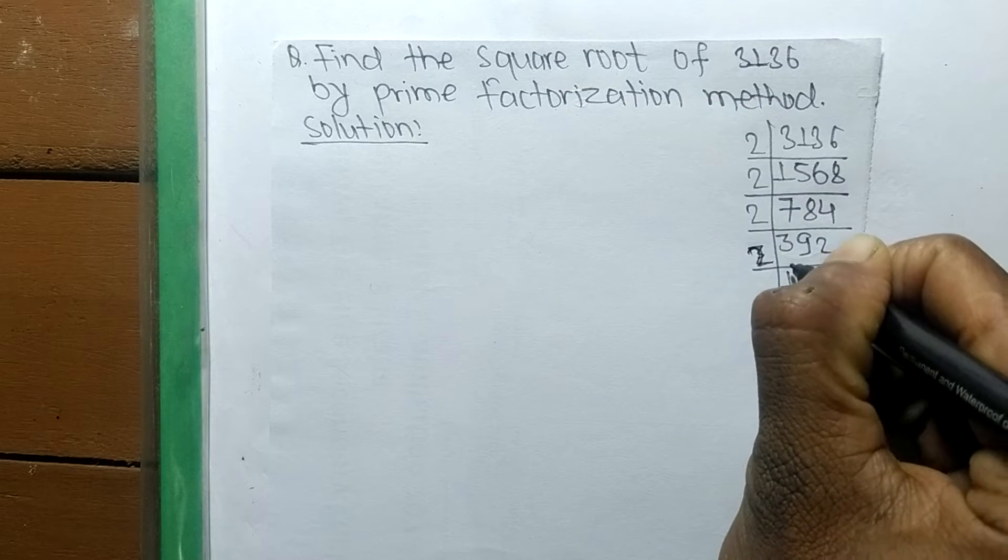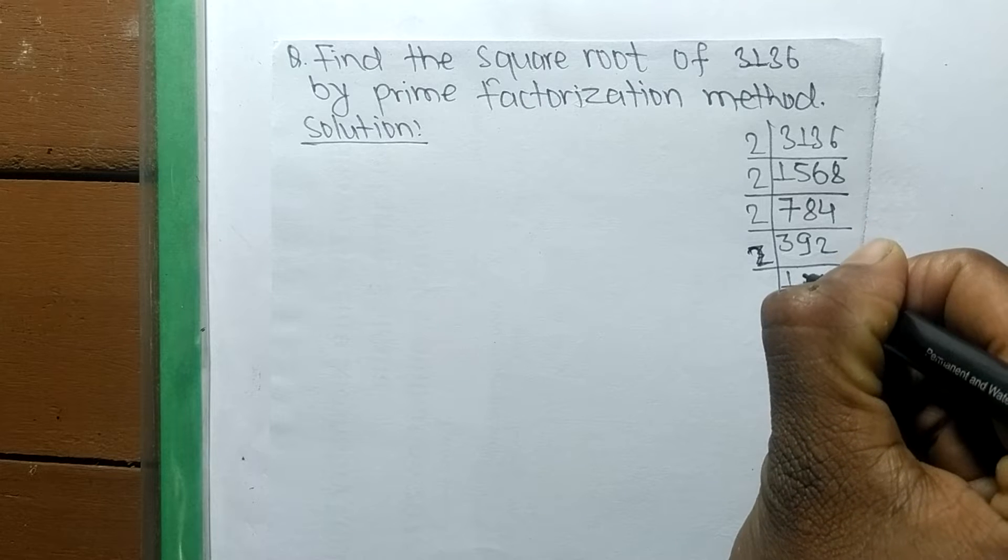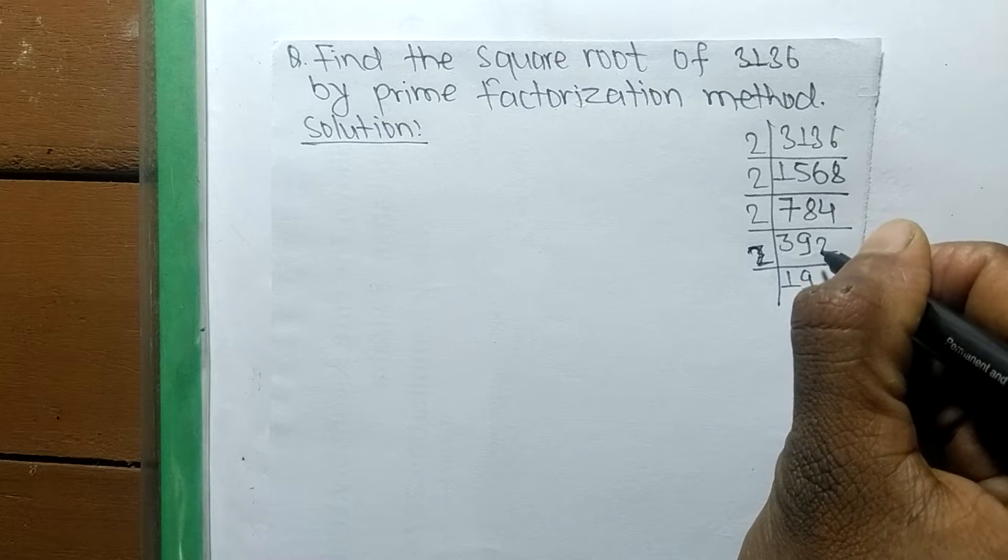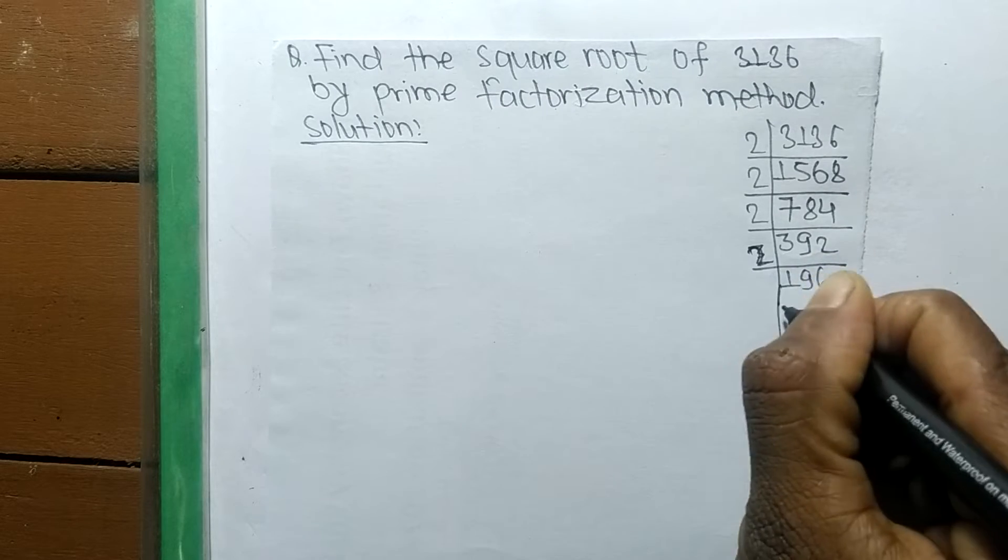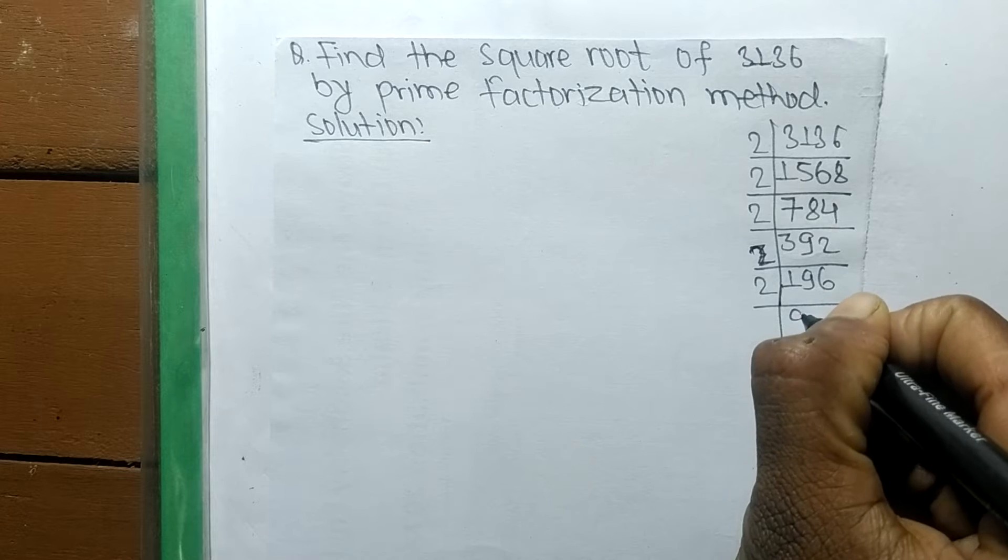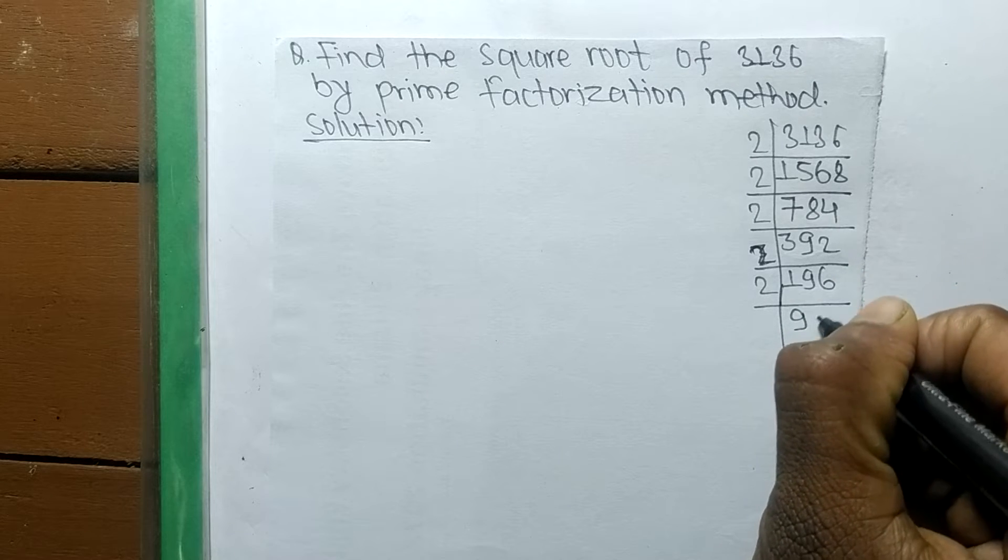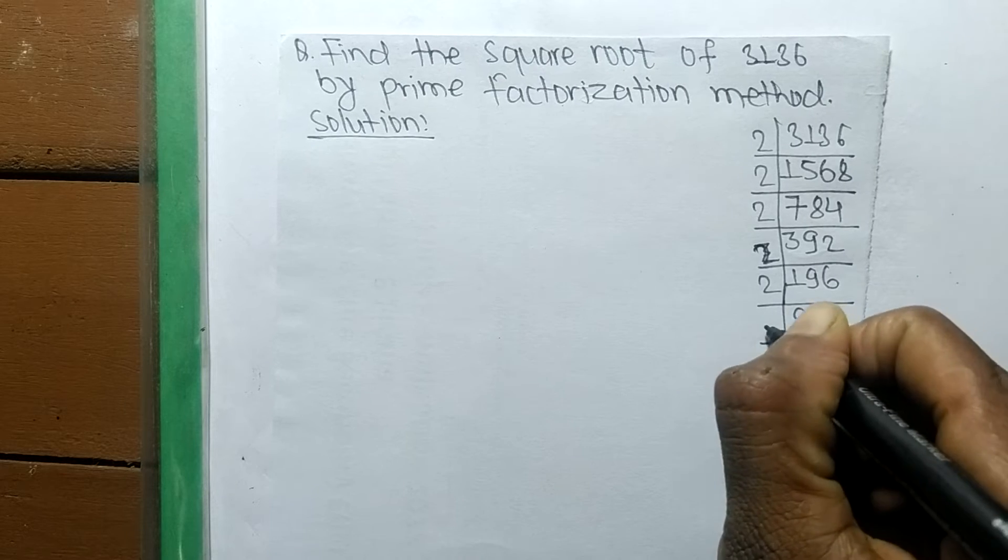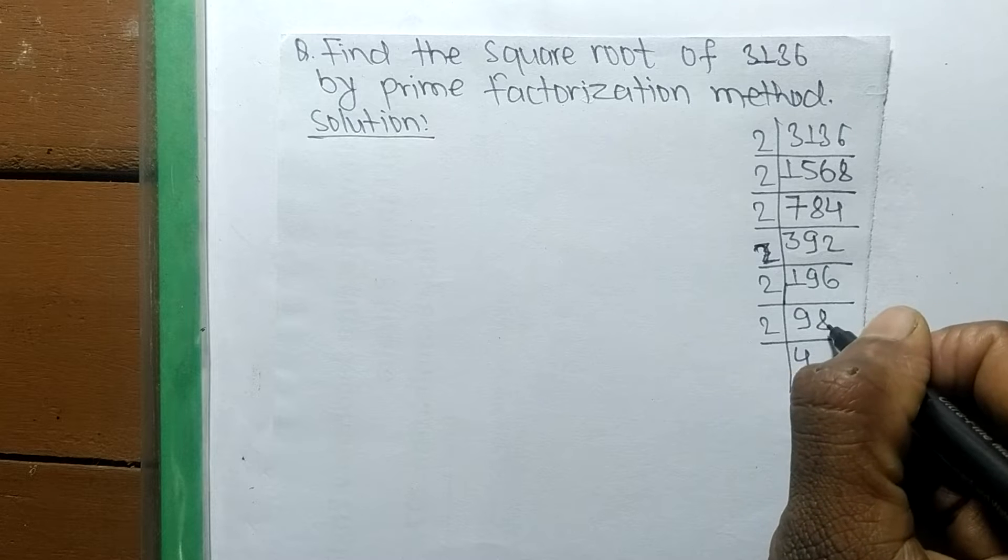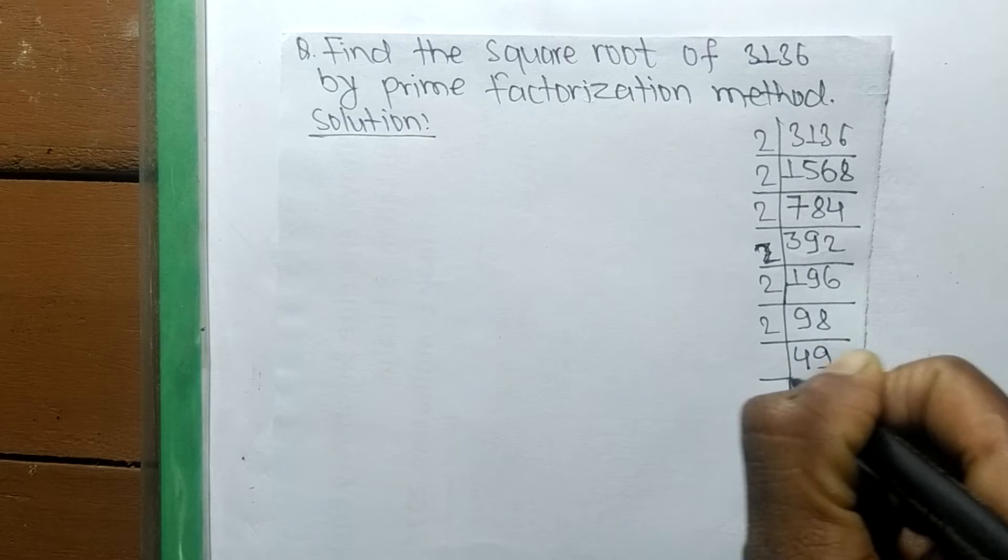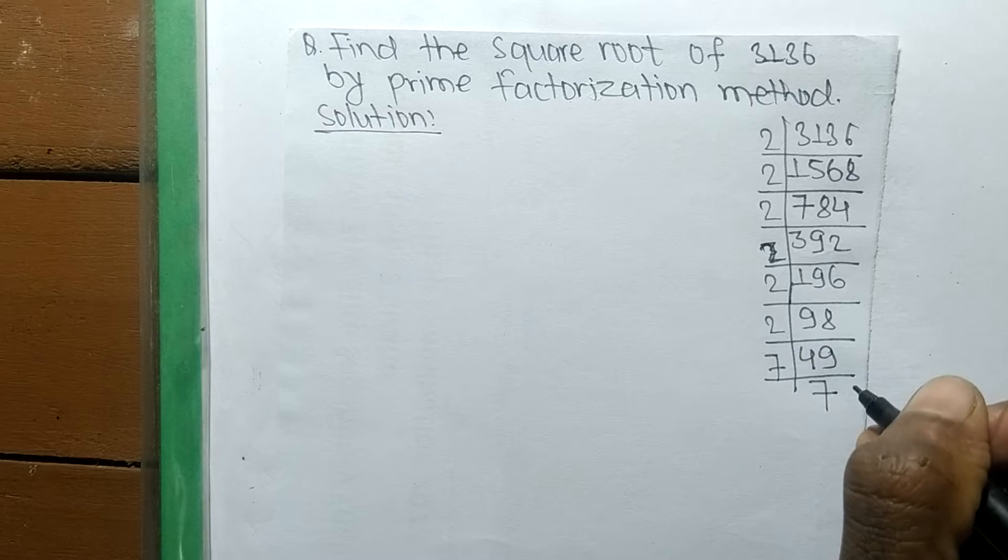Continuing the division: 2 times 49, and then 7 times 7 equals 49. So we have found the prime factors of 3136.